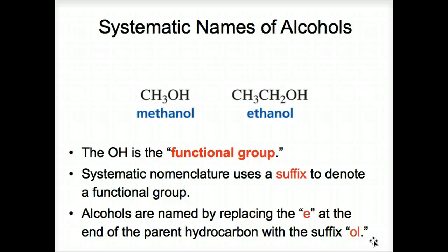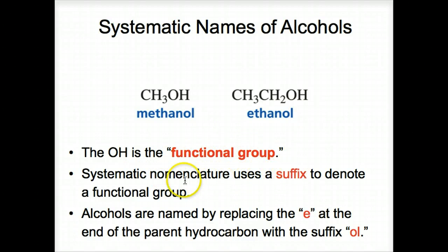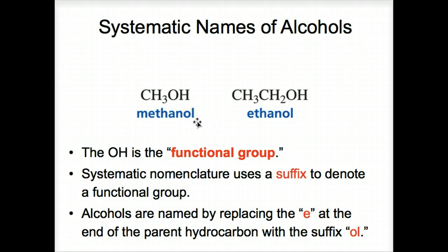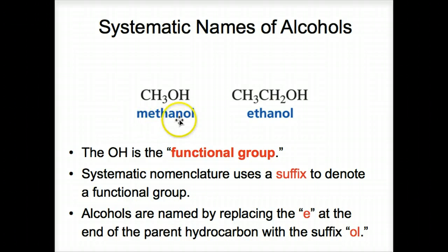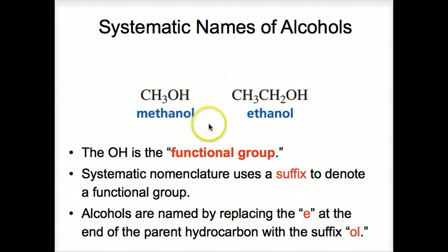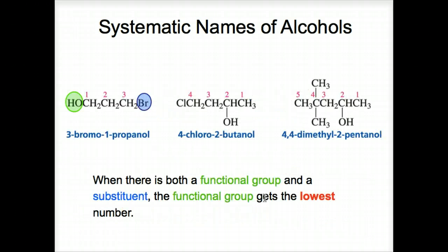We need to understand some terminology. The OH is the functional group. Systematic nomenclature uses a suffix to denote a functional group — the suffix -ol at the end of the word tells us it is an alcohol. Alcohols are named by replacing the -e at the end of the parent hydrocarbon with the suffix -ol. So methane becomes methanol, ethane becomes ethanol — we remove the -e and add -ol. Whenever you see -ol, you know it is an alcohol containing an OH.